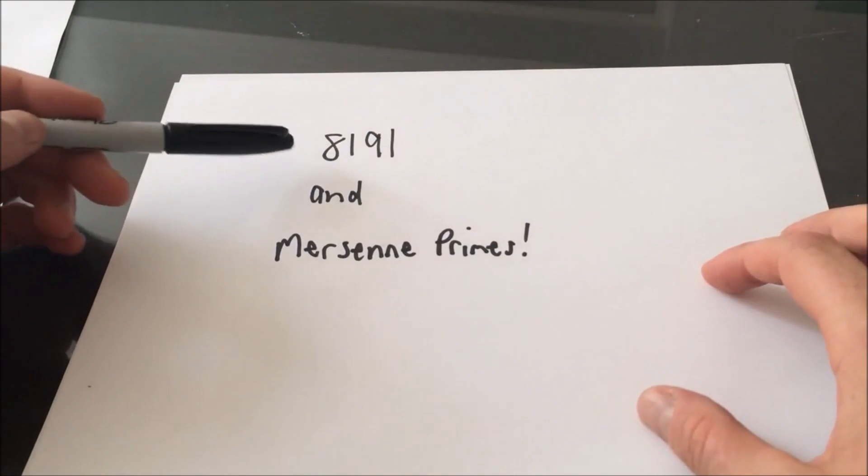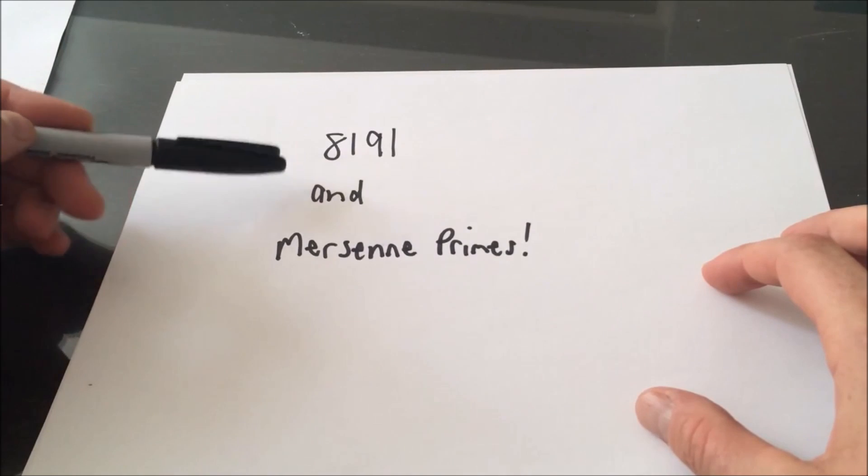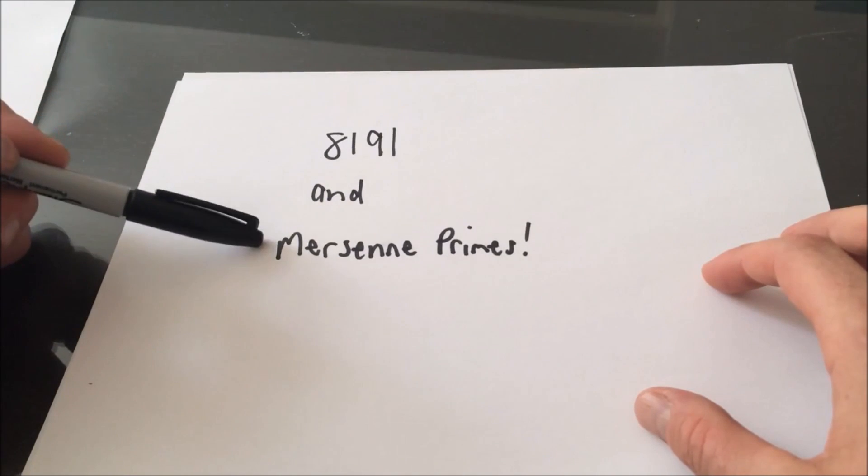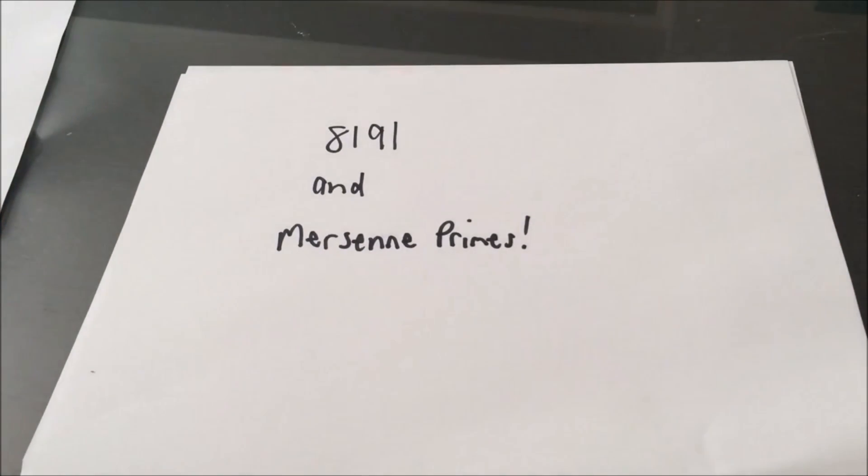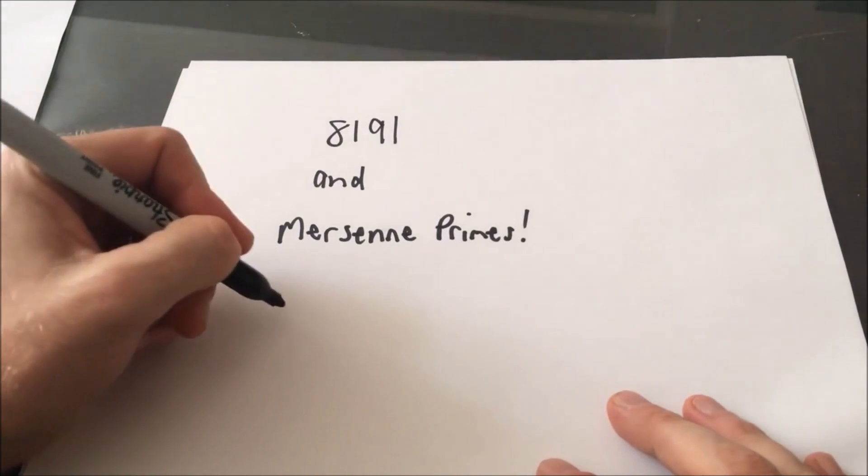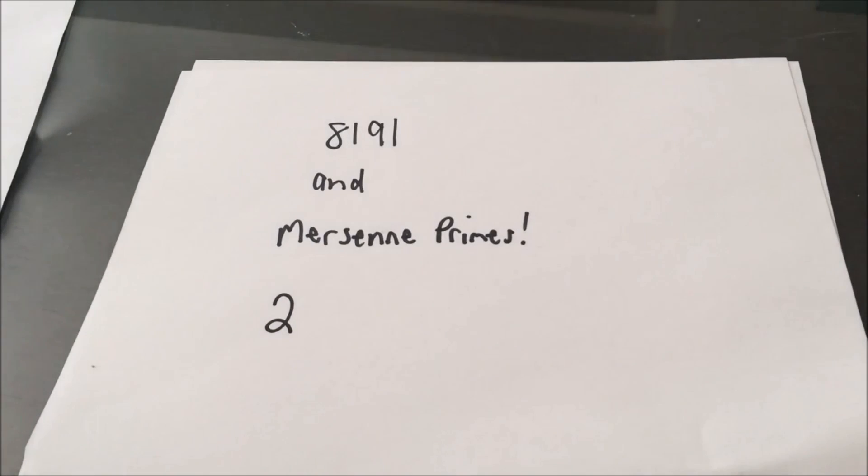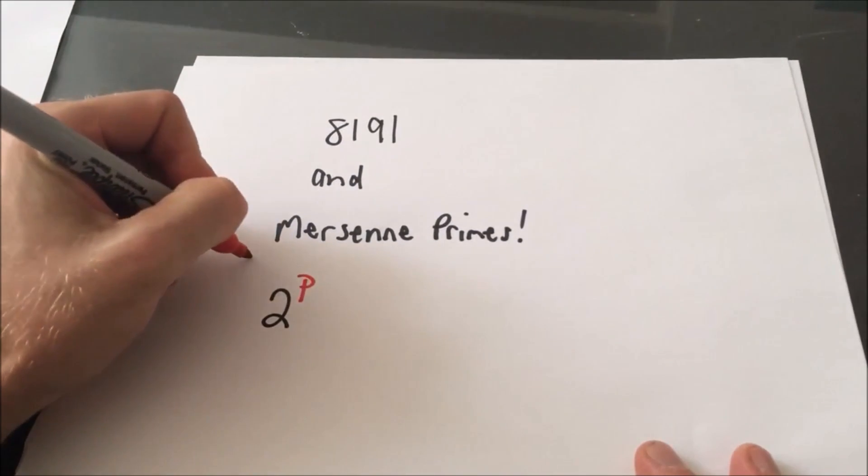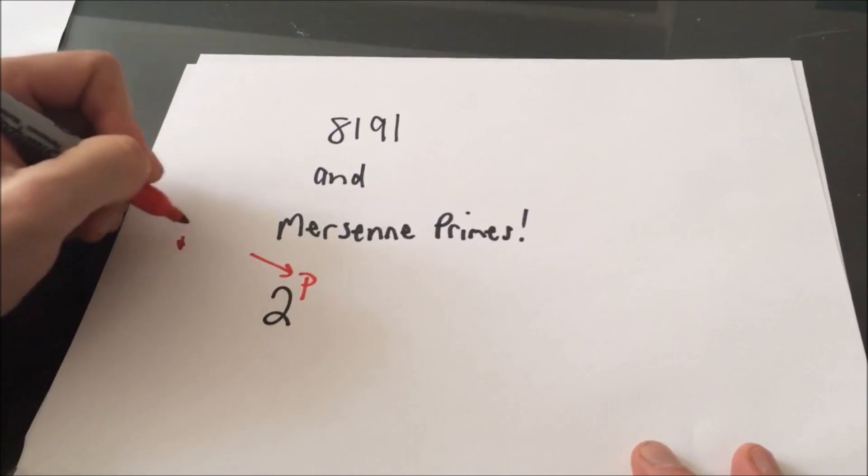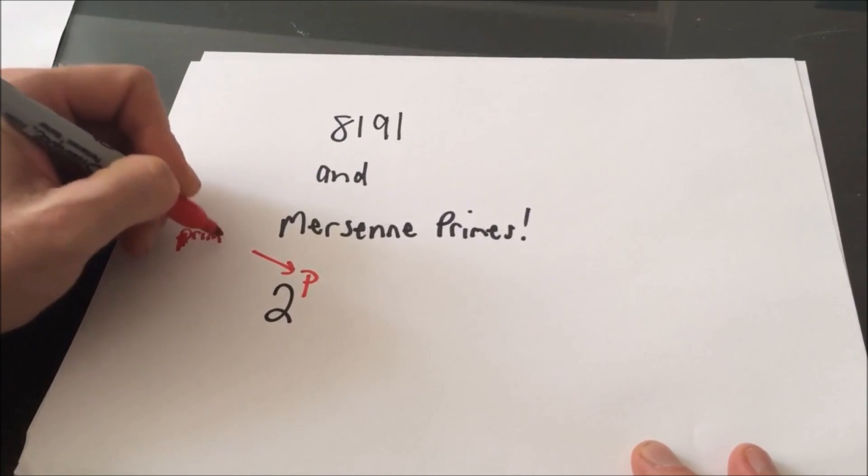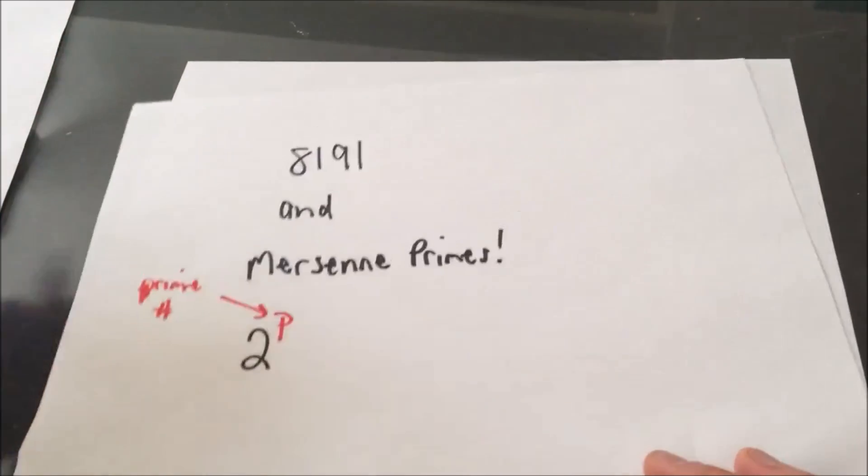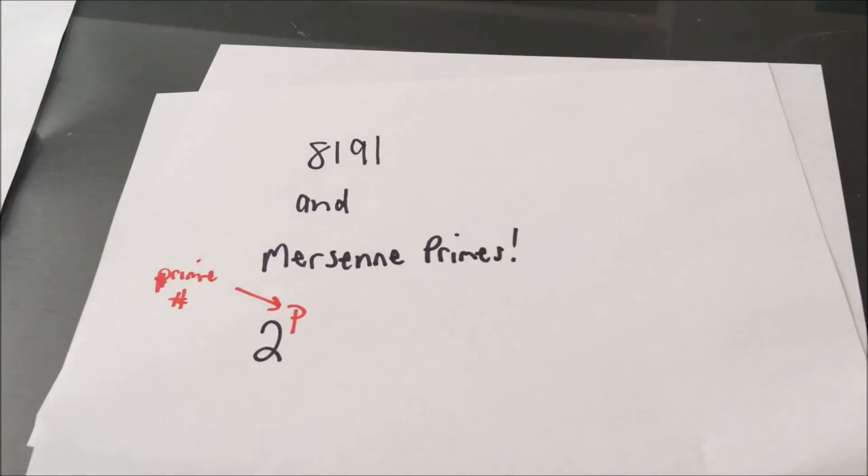Okay, the first number we're going to look at is 8,191. And this is actually a number that's known as a Mersenne prime. And a Mersenne prime is a prime number that has the form, we take two and we raise it to the power of p. And the interesting thing is p is also a prime number. And then we subtract one away from this quantity.